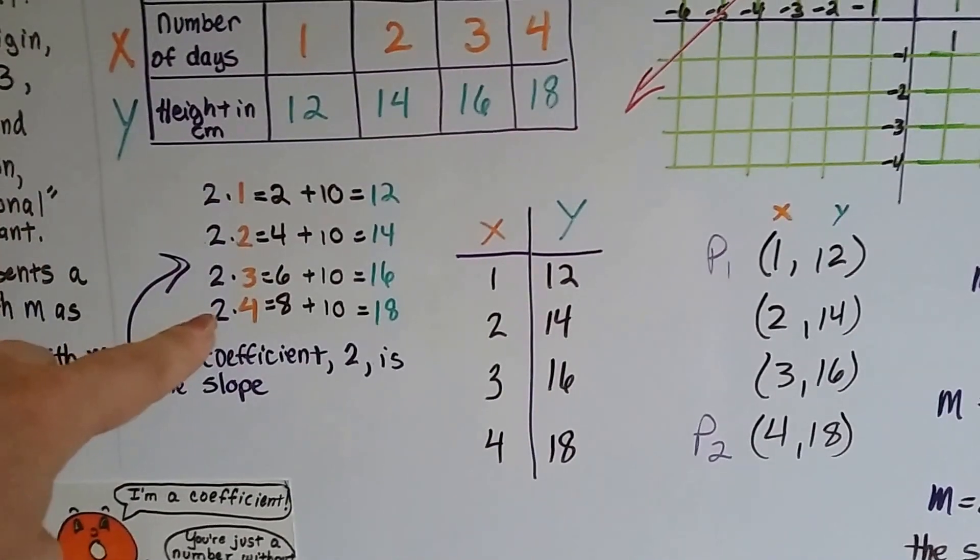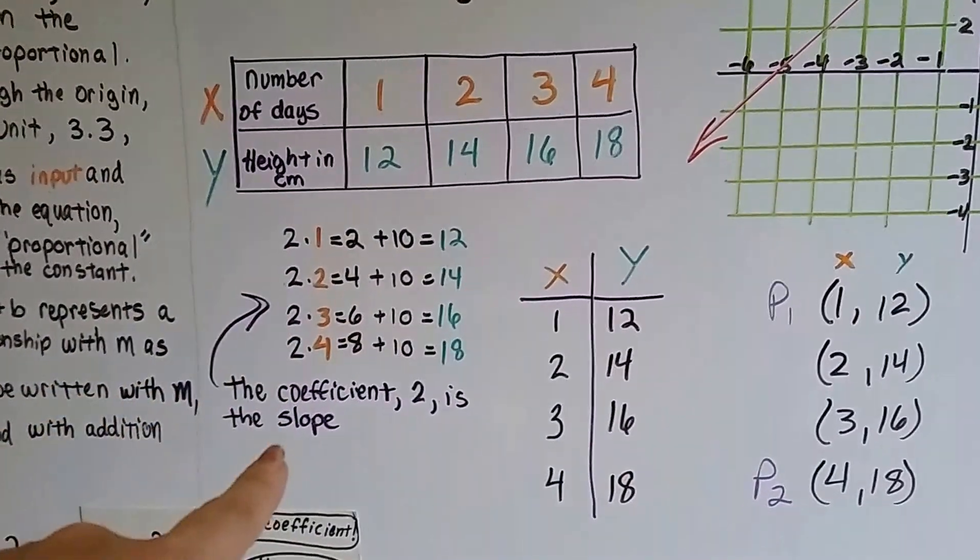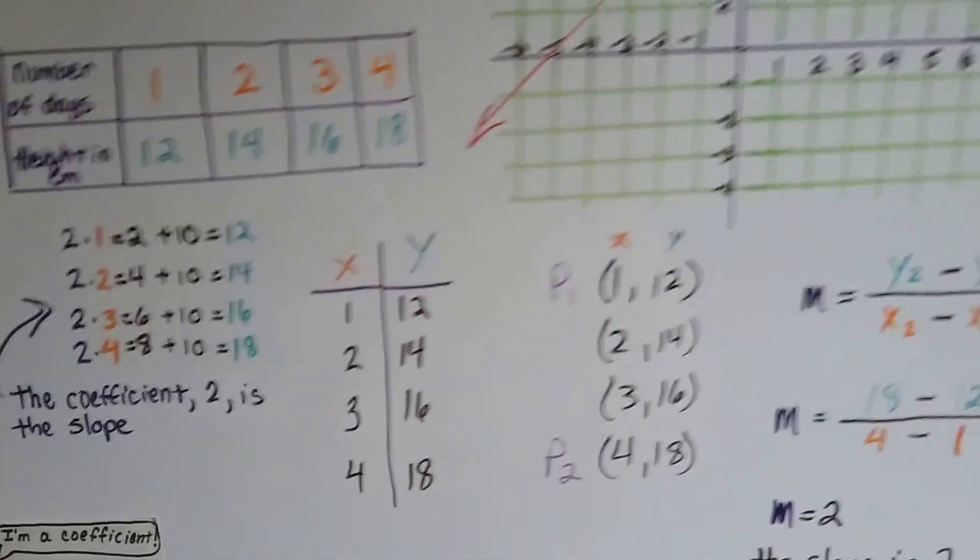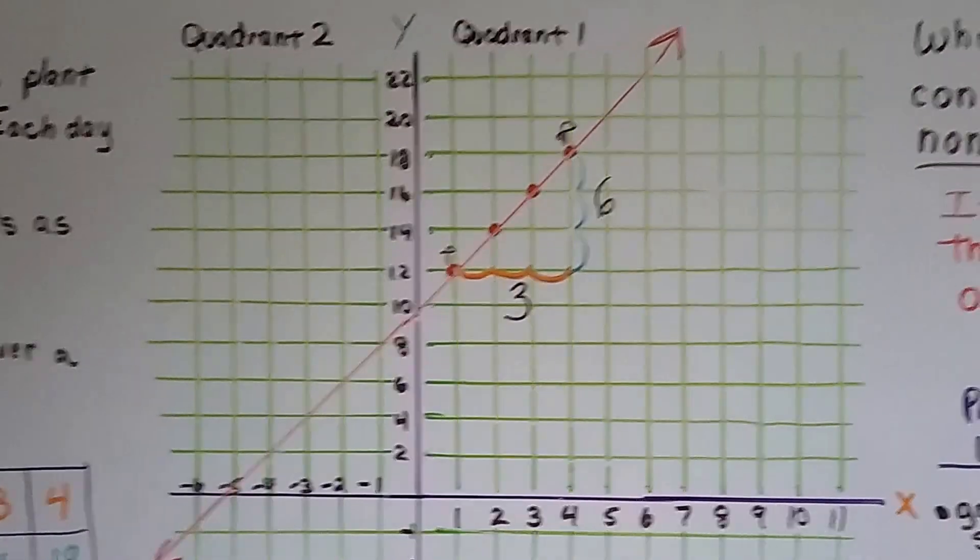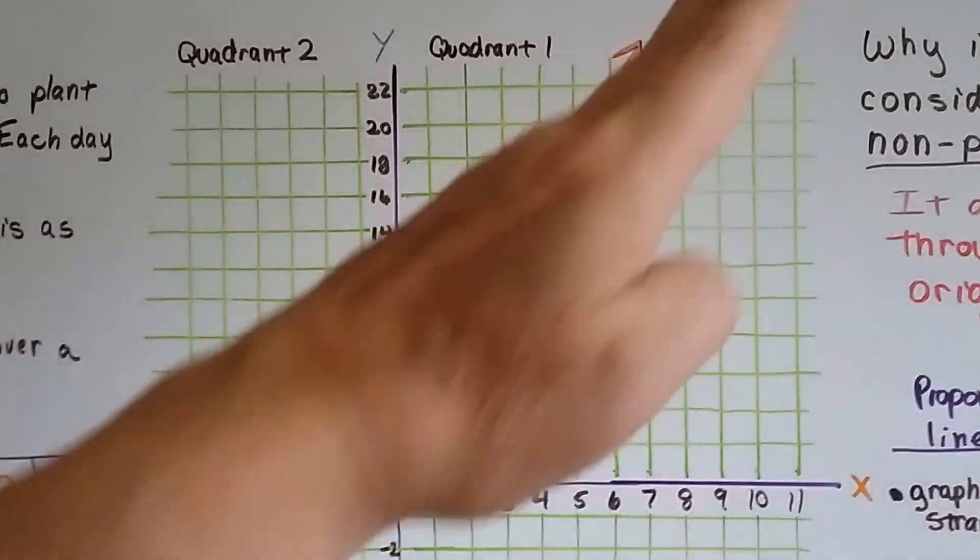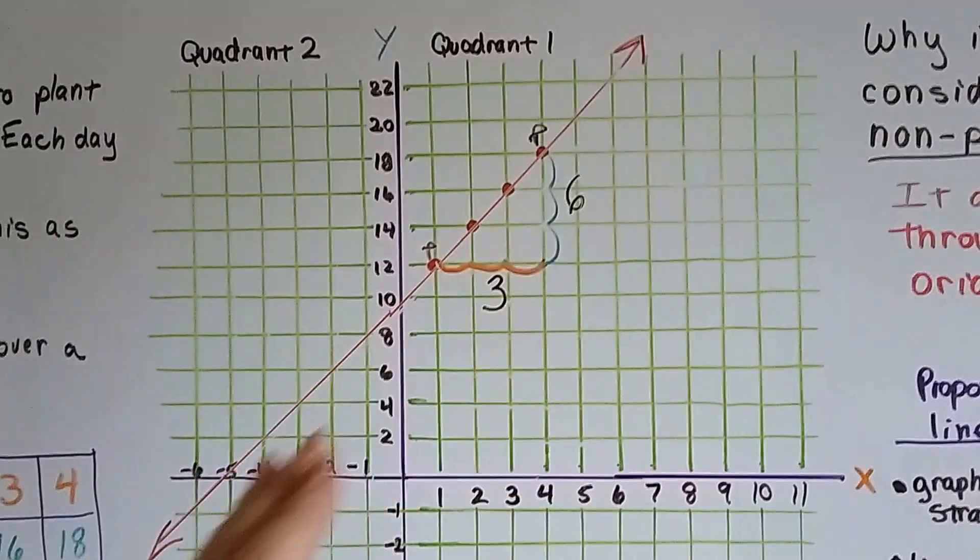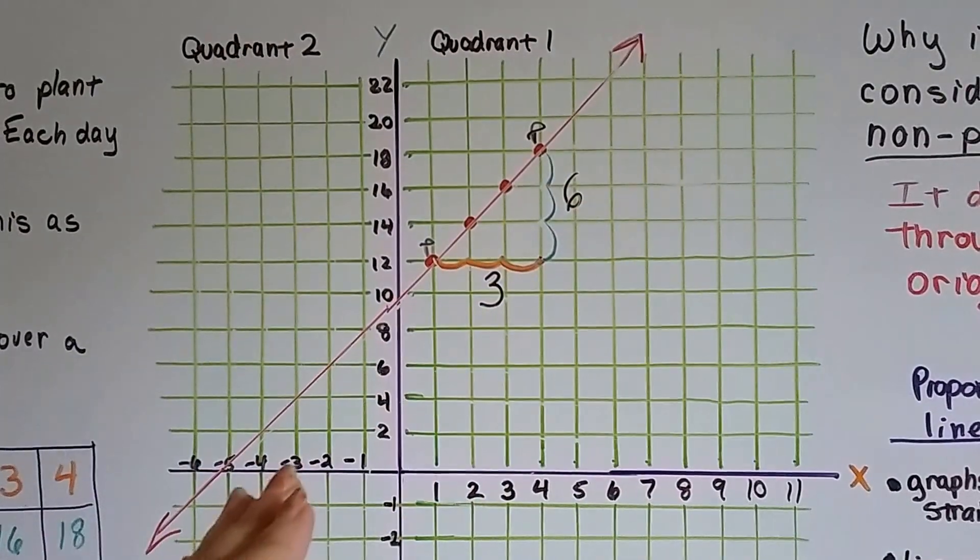If you look at this number 2 here, this coefficient for x, that ends up becoming the slope. And I'll show you. So here we've got our graph. You can see our line is coming up to the right, so that means it's going to be a positive slope.